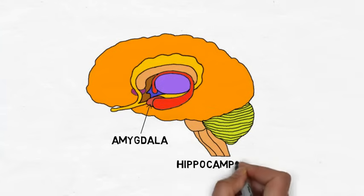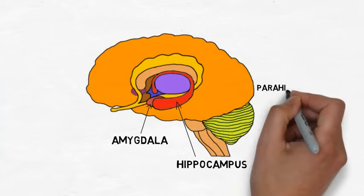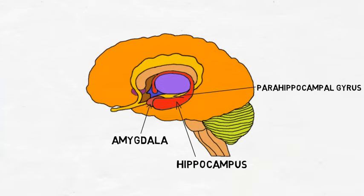The hippocampus is next to and interconnected with the amygdala. Although it is considered part of the limbic system, the hippocampus is generally associated with memory more so than emotion. The parahippocampal gyrus is an area of cortex that surrounds the hippocampus and also plays a role in memory.